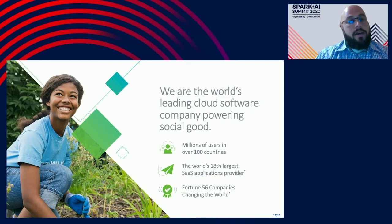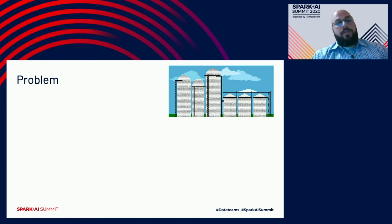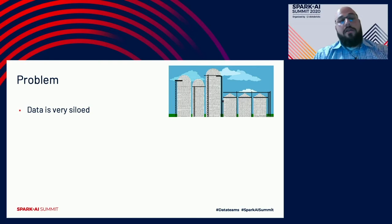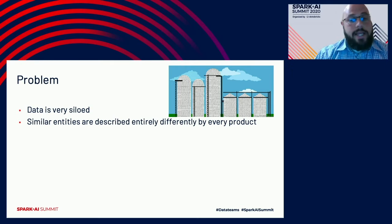Let's get started by understanding the problems that we were facing. First, we have single-tenant and multi-tenant databases that span multiple products built on different technology stacks and hosted with different cloud providers. All of our value is stored in those silos. Second, this has led to similar domain entities being stored very differently by products. For example, a constituent may look like X in product one, Y in product two, and so on.